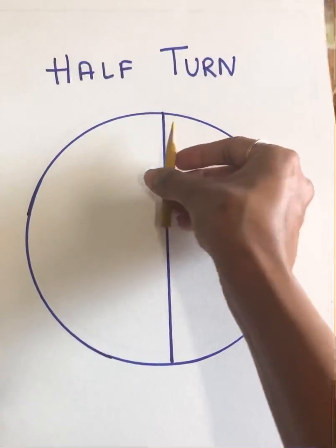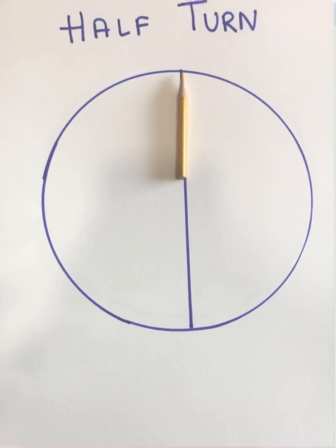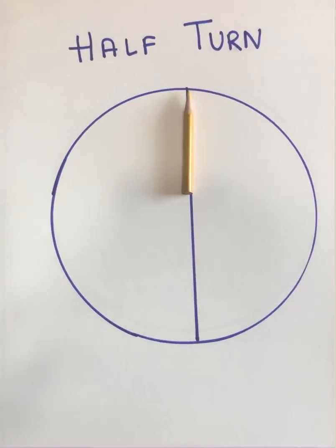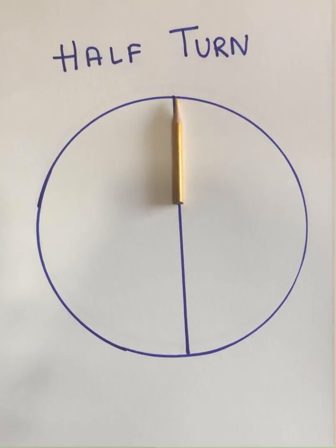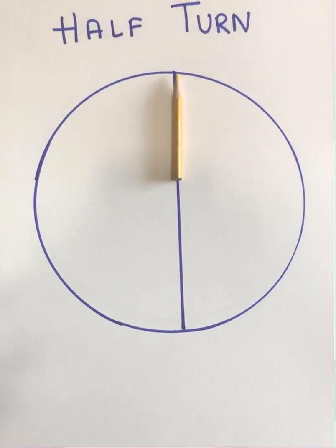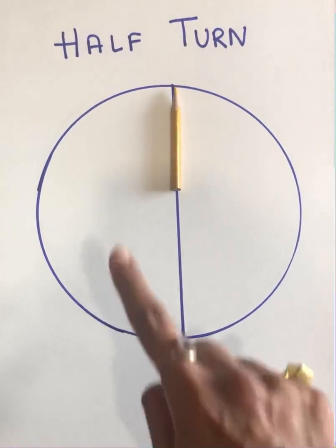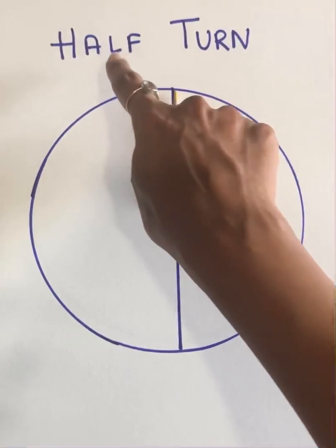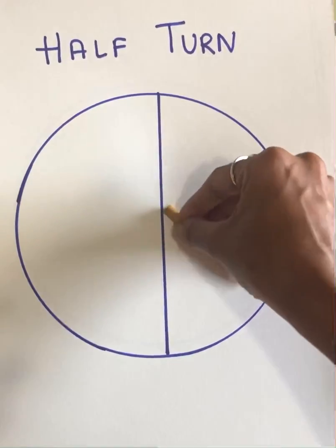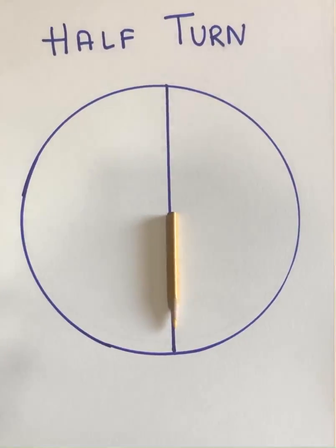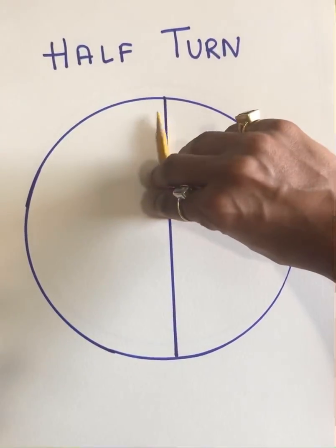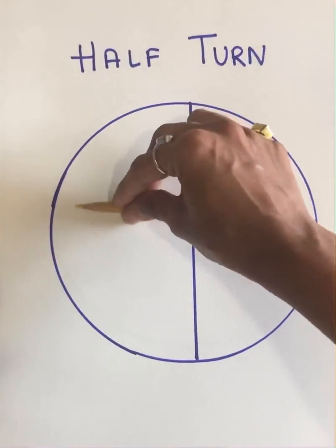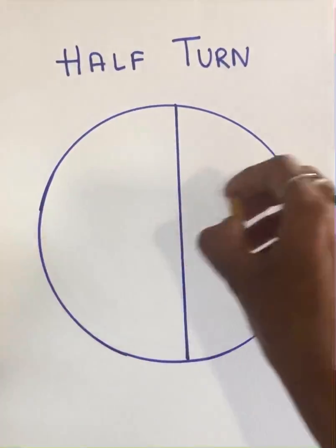Let's try and understand what we mean by half turn. Just as you know what quarter is, I am sure you know what we mean by half. I have divided this circle into halves. If I place this color pencil here and tell you to rotate it half turn clockwise — the question states clockwise rotation, so I need to rotate it half. Clockwise half turn rotation will be like this. Anticlockwise half turn rotation is just the opposite — I move it in this direction because it is anticlockwise.